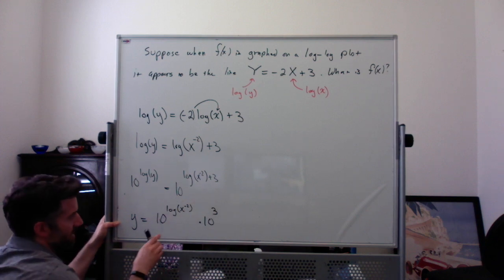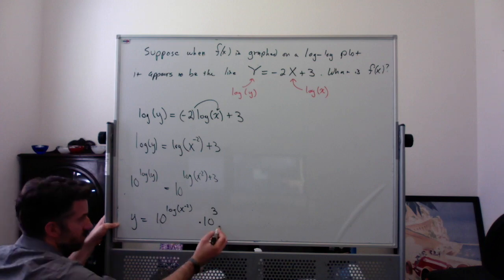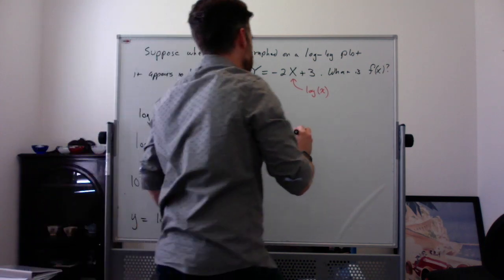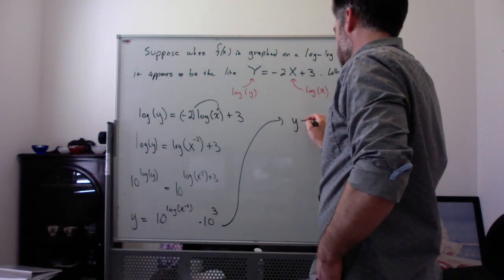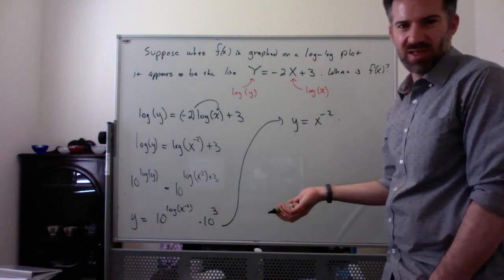Then 10^log(x^-2) is just x^-2. So you end up with y = x^-2 × 10^3, which you can simplify as 1000.